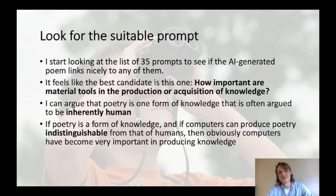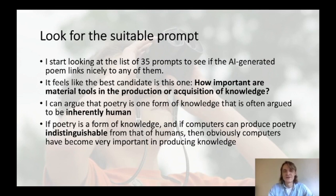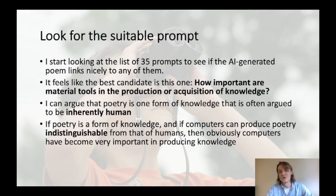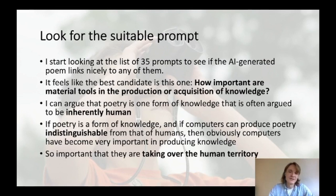If poetry is a form of knowledge, and if this form is often argued to be inherently human — something only we can produce — then if computers can produce poetry indistinguishable from that of humans, we can argue that computers have become very important in producing knowledge. It links to the prompt: if a poem is a form of knowledge and a computer algorithm — a material tool — wrote it, it shows how important material tools are. They're so good we can't even distinguish computer-generated from human-generated poetry, and they're taking over something considered inherently human.